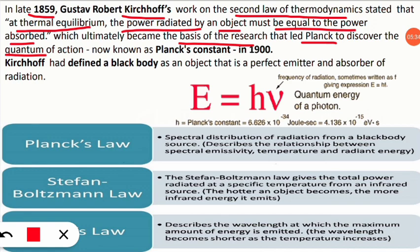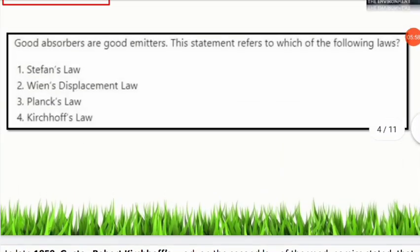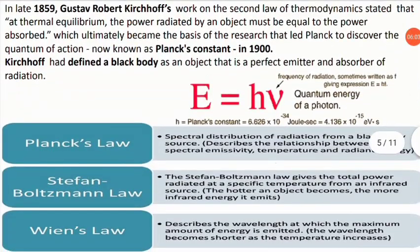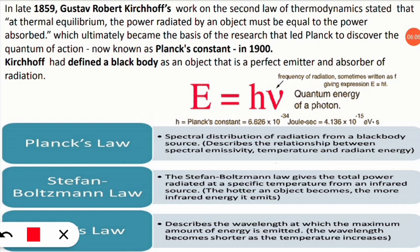Planck took that research, discovered the quantum of action, and utilized his knowledge for quantum physics. The equation he gave involves Planck's constant, denoted by H. The energy equation is E = Hν, where Planck's constant H = 6.626 × 10⁻³⁴ joule-second. He did this research in 1900. The original idea that a good absorber is also a good emitter was first given by Kirchhoff in 1859.